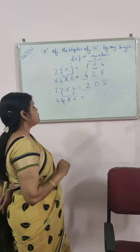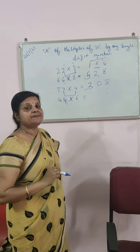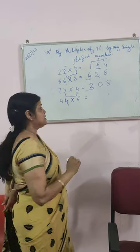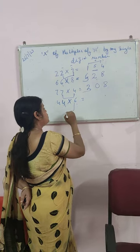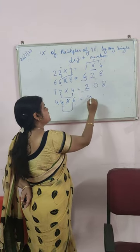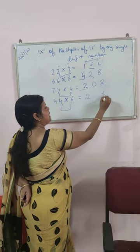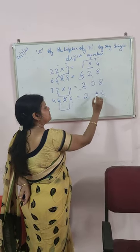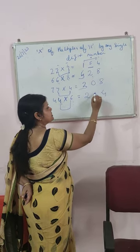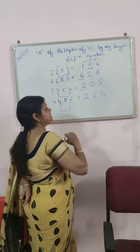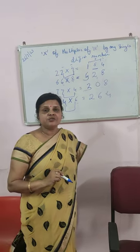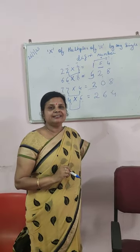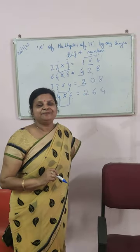At the last we have 44 multiplied by 6. So, how do we solve this? 4 sixes are 24. Add both the digits and we get 6, write it in between. Clear to everyone? Thank you.